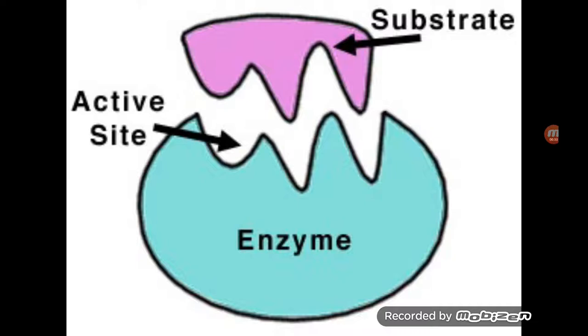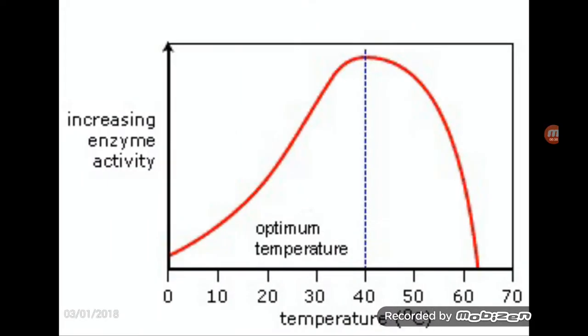We need to know that enzyme activity can change with both pH and temperature, and this is a really important graph for temperature. If you look at this graph, we need to know how to explain it - the graph is going up until about 40 degrees and then it plummets down.